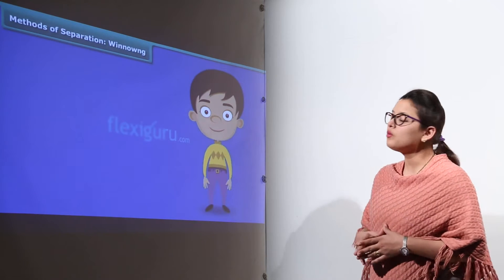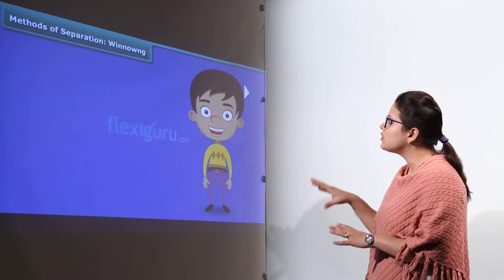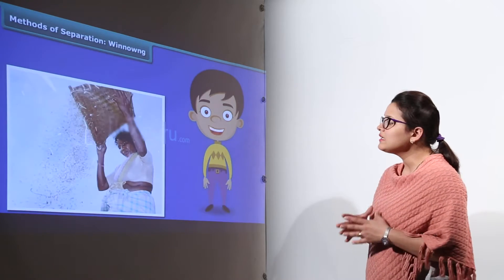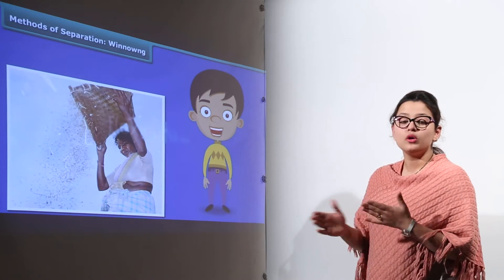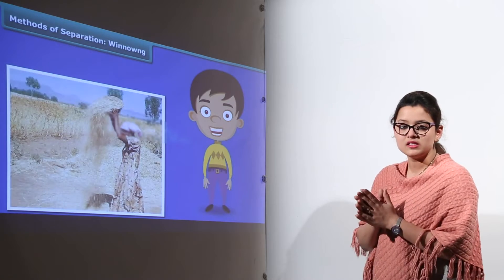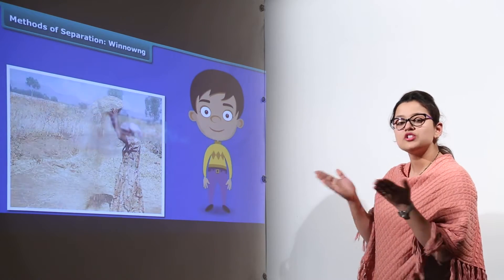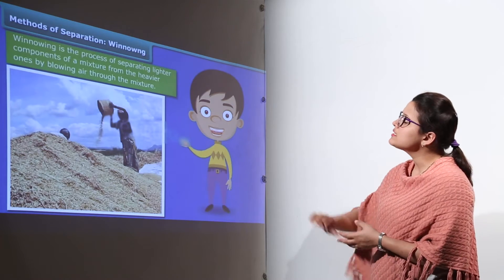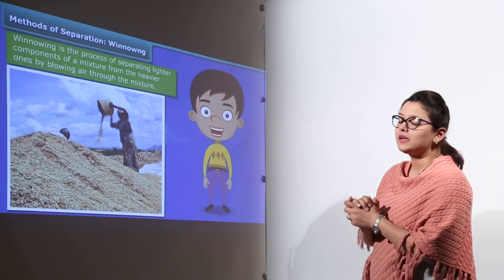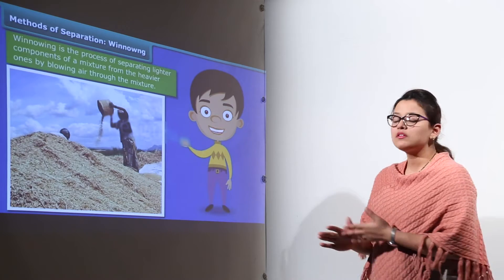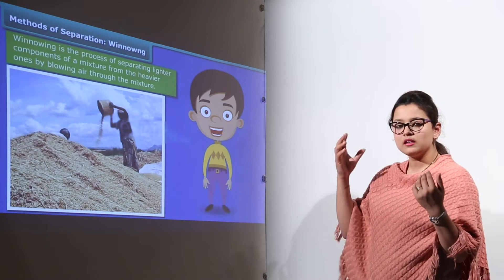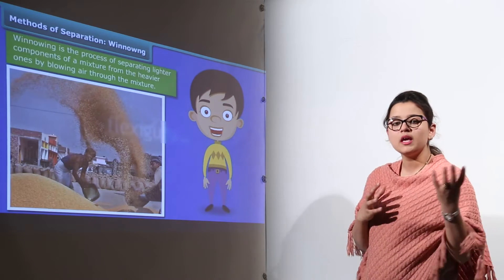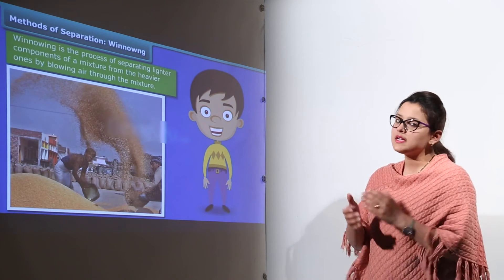The third method we are going to do is winnowing. In winnowing, you must have seen the ladies in the countryside holding up the baskets containing grains on their heads and shaking those baskets. This is done because by this process the lighter particles like husk are removed from the grains, and the grains fall down in a heap, while the blowing air carries away the lighter particles.